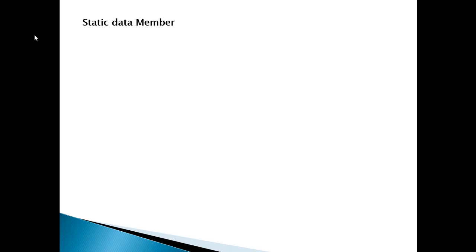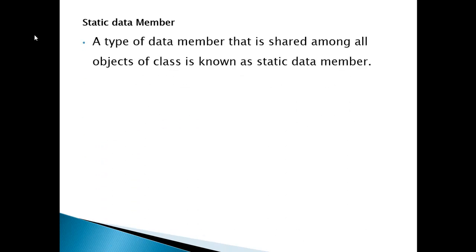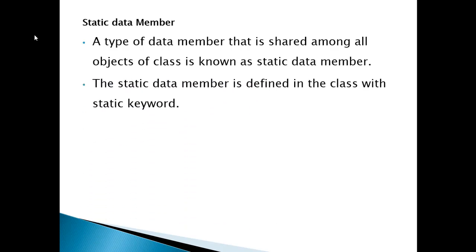Static Data Member. A type of data member that is shared among all objects of a class is known as a static data member. Whenever we declare a data member as static, it means it shares its memory location among all objects of the concerned class. There is no need to create a duplicated memory location for each object. The static data member is defined in the class with the static keyword.